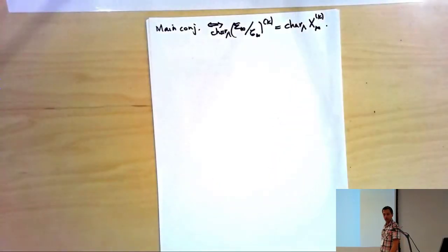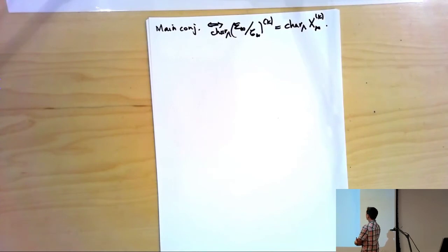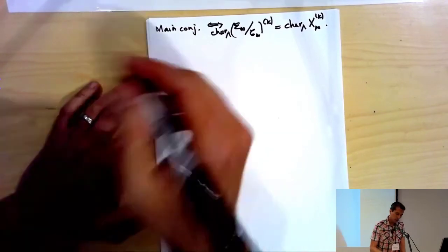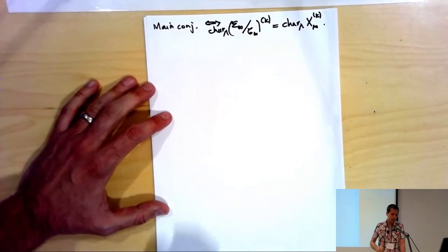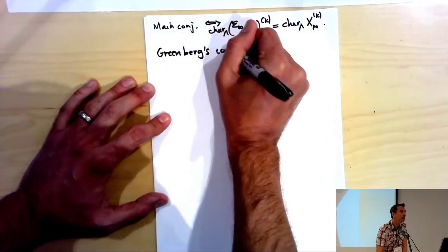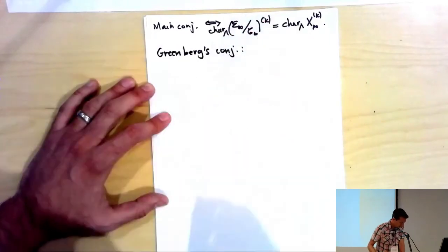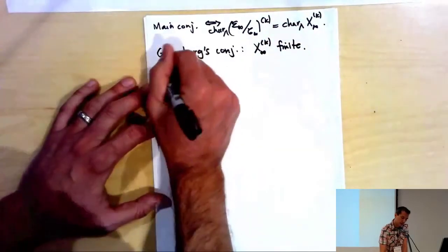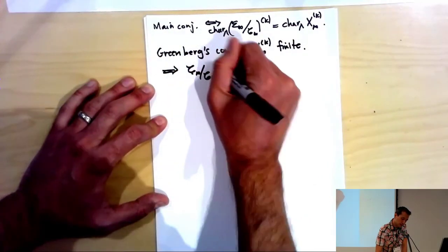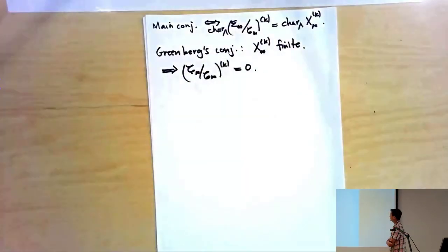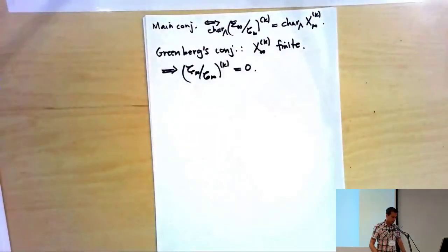Notice that the thing on the right is supposed to be finite, meaning its characteristic ideal is 1, and the same on the left. There's a weaker form called Greenberg's conjecture: that 𝒳_∞^k is finite. Under Greenberg's conjecture, E_∞/C_∞ in the k-th eigenspace is zero, and the main conjecture holds. Greenberg's conjecture implies a generalization of Leopold's reflection principle — relating the k-th and (1−k)-th eigenspaces — which is itself a generalization of Kummer's result that A_F is trivial iff A_F⁻ is trivial. If we knew Greenberg's conjecture, the main conjecture would be much easier, but I don't know how to prove it.